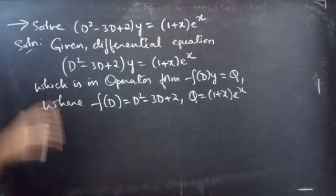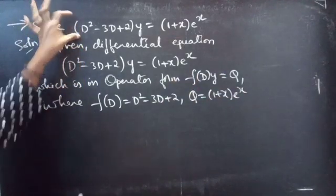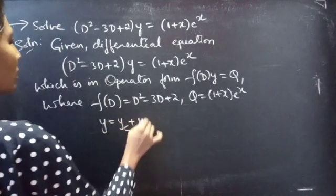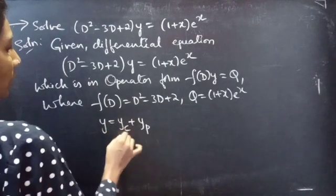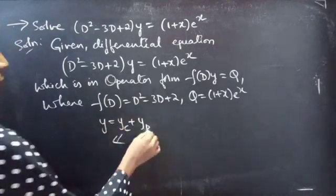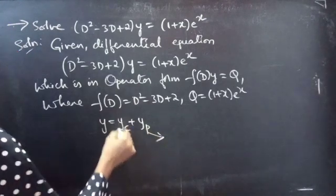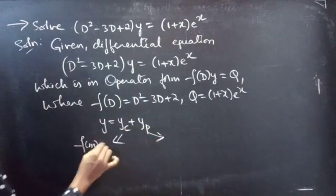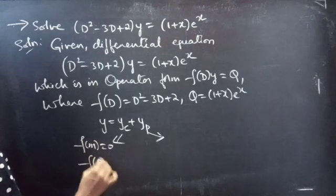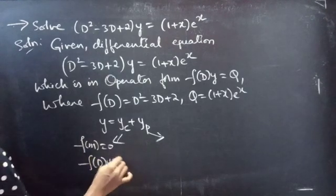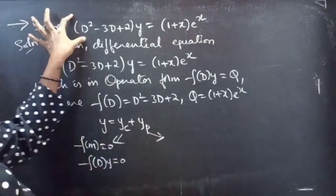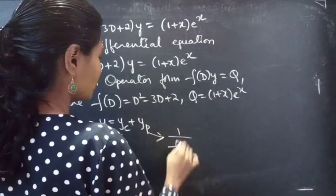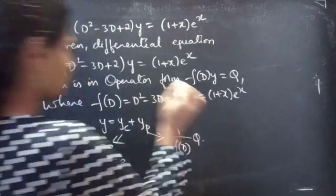We need to find the general solution, which is given by y = yc + yp, where yc is the complementary function and yp is the particular integral. We will find yc using the roots of the auxiliary equation of the homogeneous equation, and we will find yp using (1/f(D))·Q.